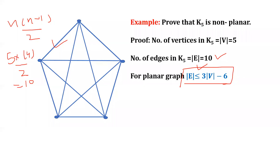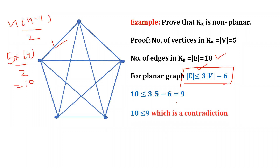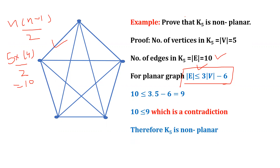You can see that this is a false inequality because you will get 10 ≤ 9 after simplifying, which is a contradiction. Hence K5 is non-planar.